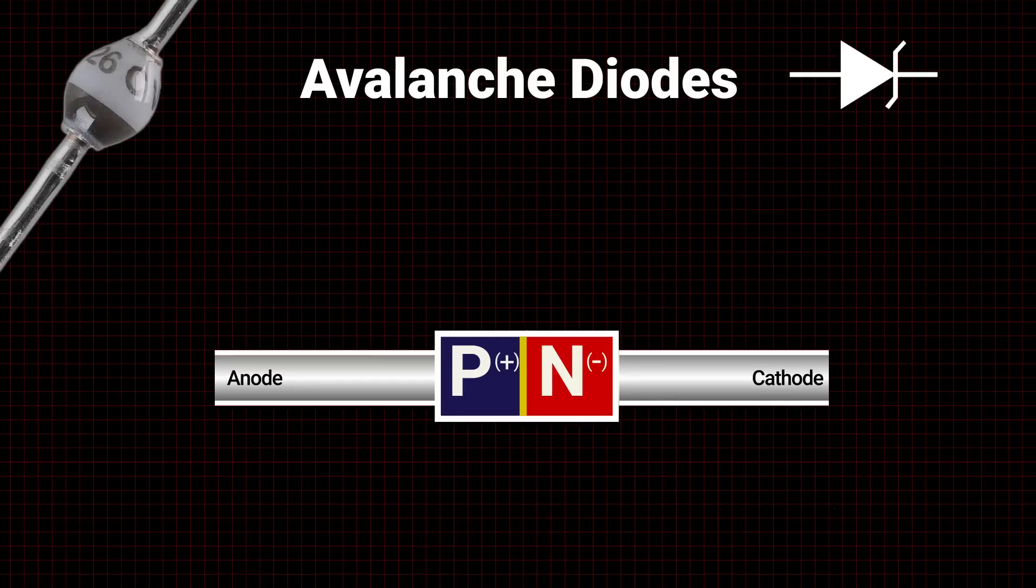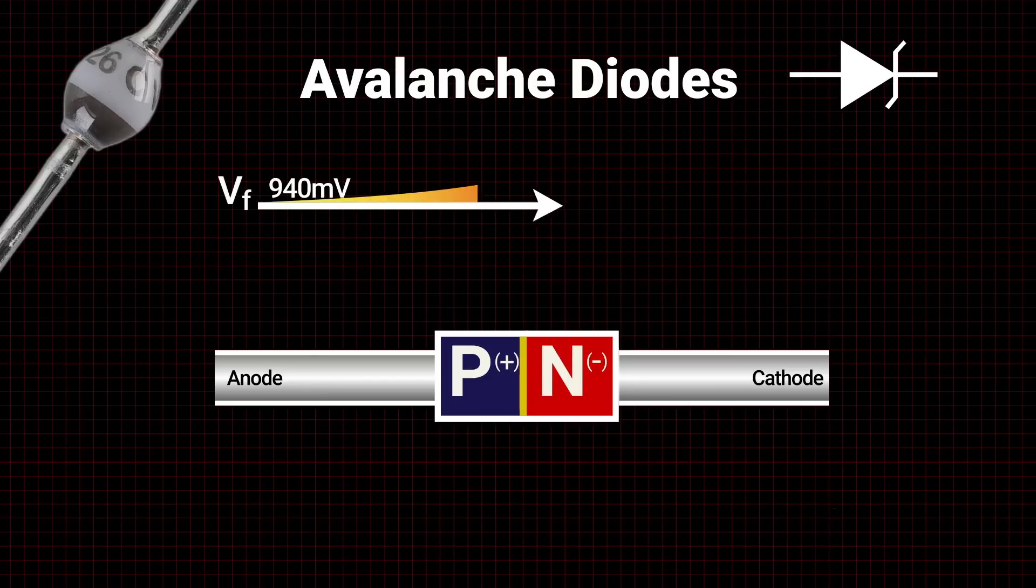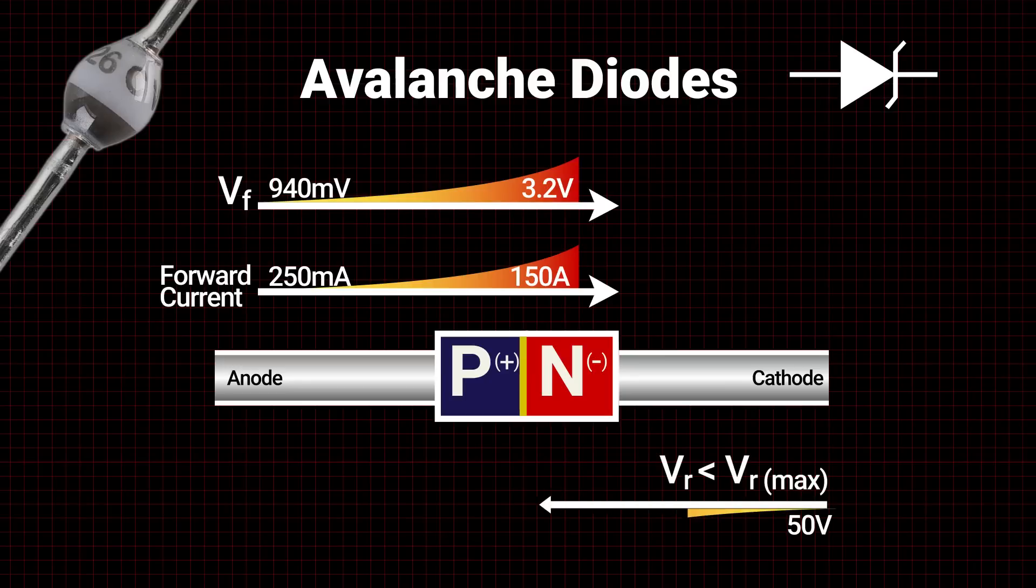Avalanche diodes are similar to Zeners, as they are also designed to break down and allow reverse current but at a much higher voltage tolerance. Because they create a lot of noise, they are most commonly used in applications that require a noise source, such as radio equipment.